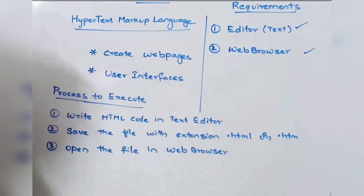Many more software versions are available today in upgraded form, but the most widely used version is HTML 4.0.1, which was introduced in 2000 and officially standardized in December 1999.